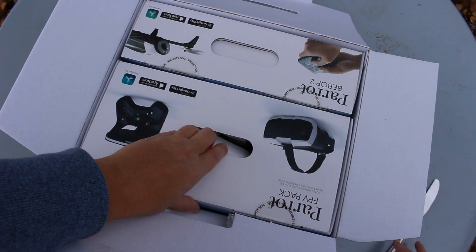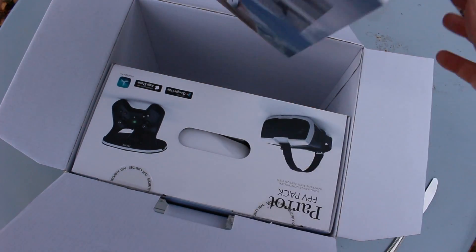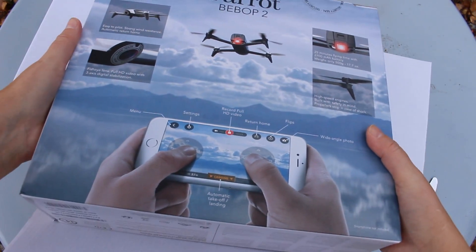So inside, a little bit of a flyer to the website and we have two packages. We've got the drone itself and the goggles and the sky controller. Take a look at the drone itself first.